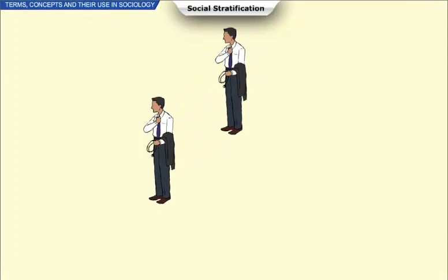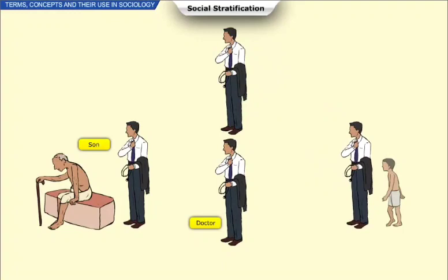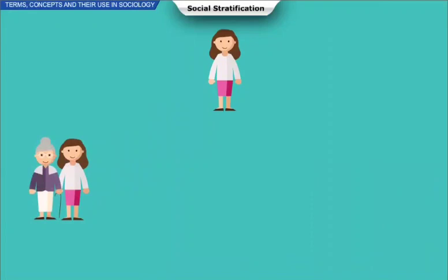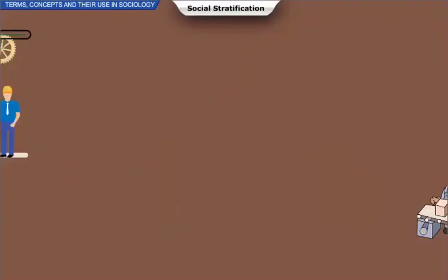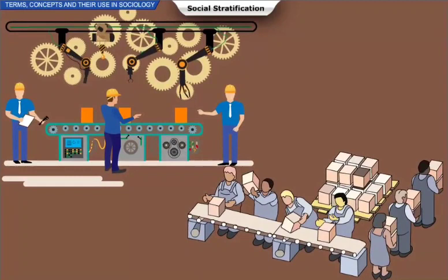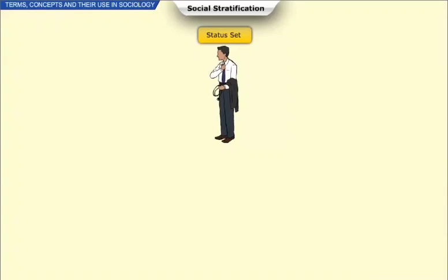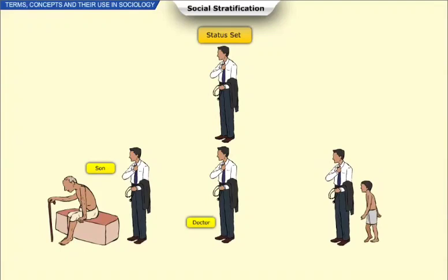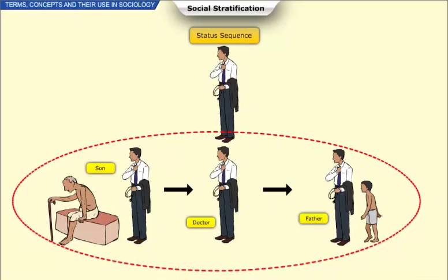In modern society, an individual occupies different kinds of status throughout his or her lifetime — for example, a woman occupying the status of daughter, wife, entrepreneur, mother, and grandmother at the same time. The different statuses occupied by an individual in a modern society is known as status set, and the statuses acquired sequentially throughout the course of one's life is known as status sequence — for example, a man becoming a husband, then a father, and eventually a grandfather.